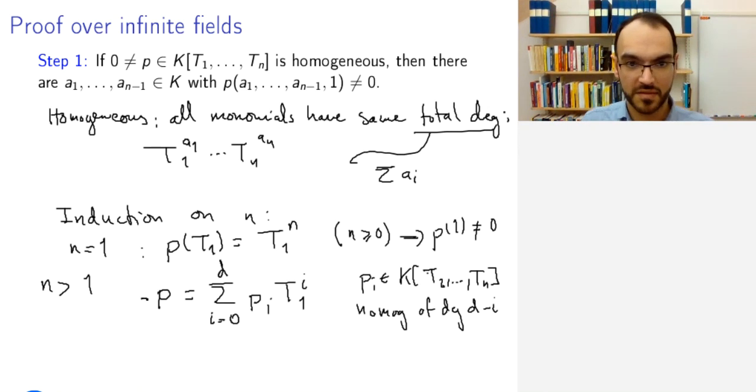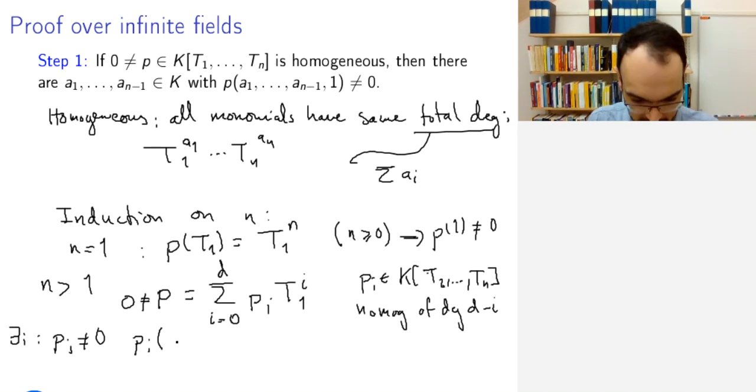But assuming that, which we do, that this is not the zero polynomial, one of these Pi's will have to be non-zero. And so by induction, there exists i such that Pi is not zero, and then by induction, Pi of some numbers a2 to an-1, 1 is not zero.